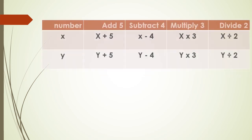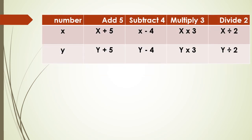Now we have two numbers x and y, and we want to write each sentence as a mathematical expression. The number x add 5 will be x plus 5. Subtract 4 will be x minus 4. Multiply 3 will be x multiplied by 3. Divide 2 will be x divided by 2.